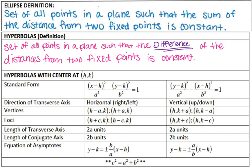So if you look at your standard form for your hyperbolas, they again look very similar to ellipses with one key difference: instead of adding, we are now subtracting. With hyperbolas, your graphs are going to look like either directions to the left or to the right, or hyperbolas that open up and down. We're going to find the vertices, foci, transverse axis, conjugate axis, as well as the equations of asymptotes.